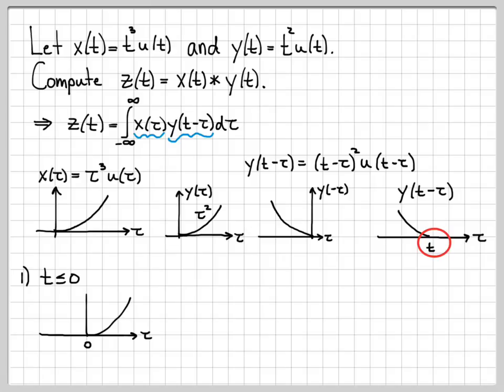So going with my plots, I can plot x of tau, and it looks like this. And y of t minus tau, when t is less than or equal to 0, looks like this. If t is less than or equal to 0, on the time axis here, it's below 0. Here's 0 right here, and there's t. It has to be below it. So here's a little cartoon I sketch.